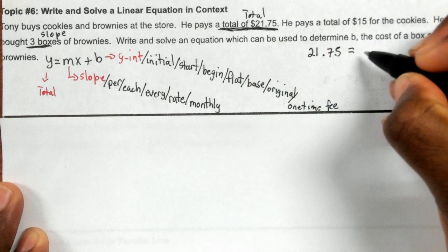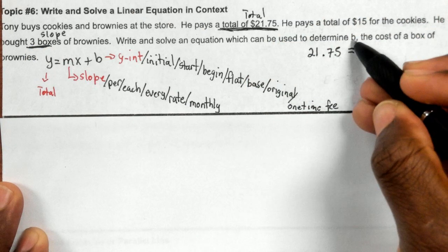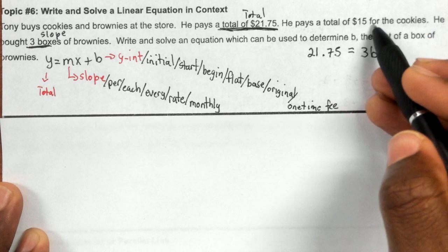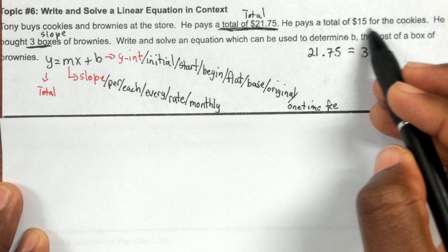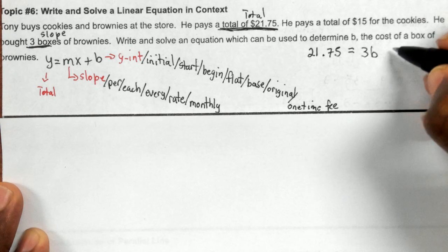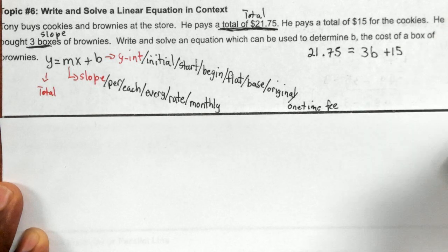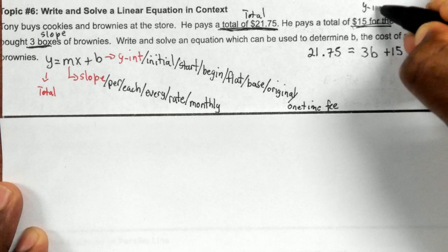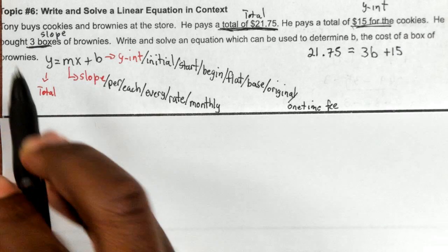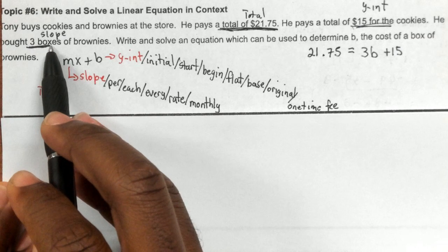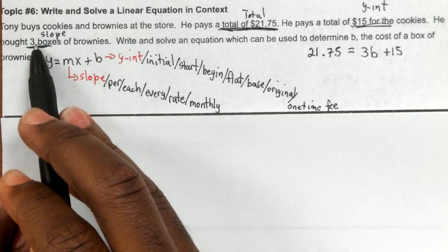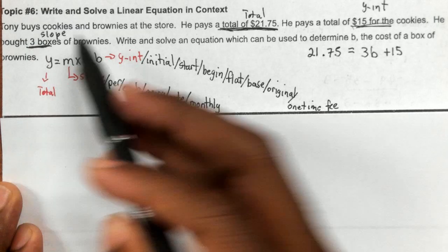So we're going to use three, let's use the letter B for brownies. And then he pays, for all the cookies he buys, he pays $15. So he only buys the entire set of cookies for 15. This would be my y-intercept, because he's buying three entire boxes of brownies but one set of cookies.